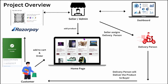Since the seller has added products, they are visible to customers who can view all products and search by category. When a customer wants to order, they add products to the cart and proceed to checkout. For ordering, the customer must make a payment — as soon as they click the order button, multiple payment options appear: UPI, debit card, credit card, and more.